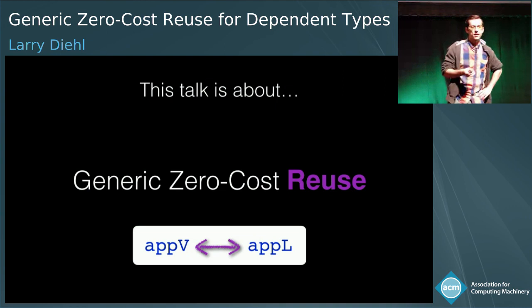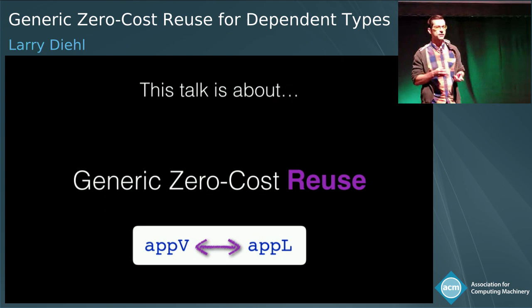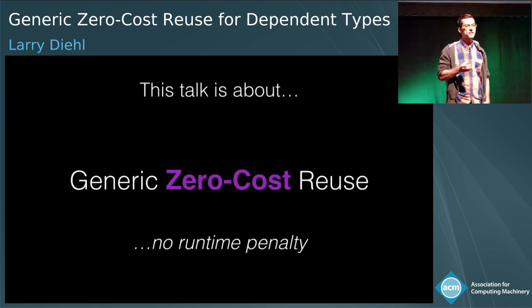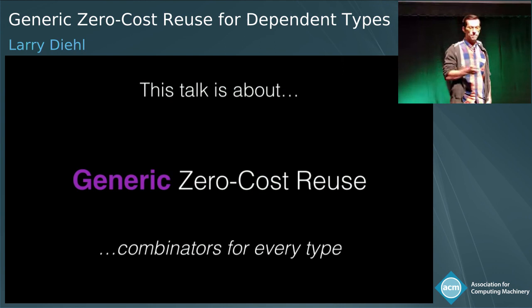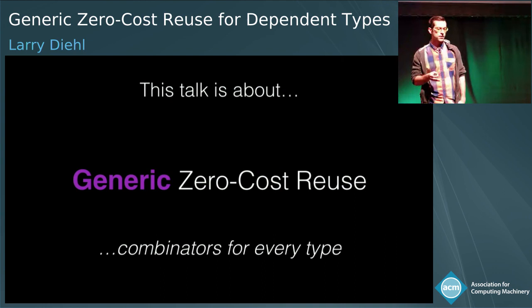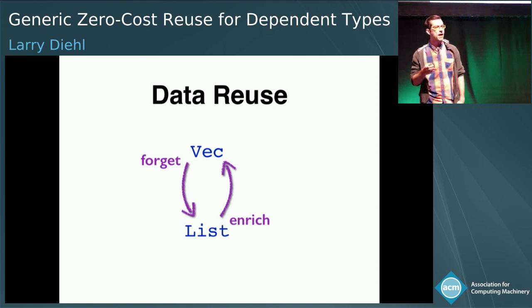This talk is about generic zero-cost reuse. By reuse we mean that if you have something like the vector append function, we want to reuse it to define something like the list append function and vice versa. By zero cost, we mean the function defined by reuse should have no runtime penalty with respect to the reused function. And by generic, we mean we want to define combinators for the types of our language such that the process of reuse can be done incrementally and in a structured way rather than manually and all at once.